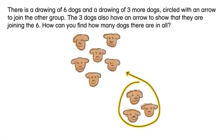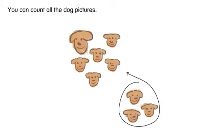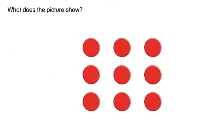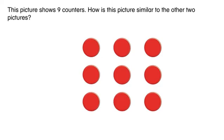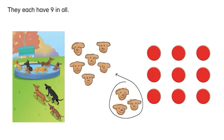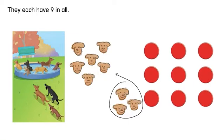How can you find how many dogs there are in all? You can count all the dog pictures. What does the picture show? This picture shows nine counters. How is this picture similar to the other two pictures? They each have nine in all.